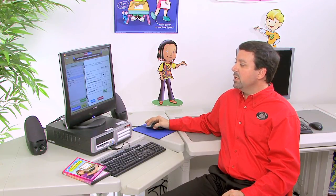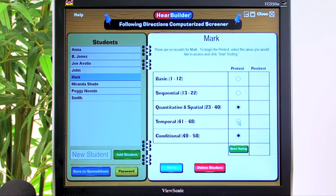Now we will go back to the home screen, and now let's look at some examples from the Quantitative and Spatial subtest.